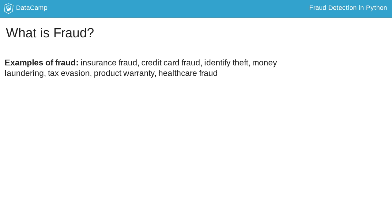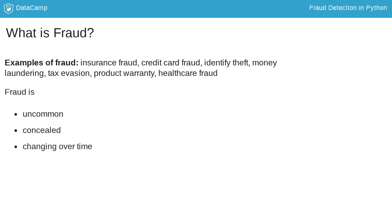Detecting fraud is typically challenging because of these four characteristics of fraud. First of all, fraud cases are in a minority — sometimes only one-hundredth percent of a company's transactions are fraudulent. Fraudsters will also try their best to blend in and conceal their activities. Moreover, fraudsters will find new methods to avoid getting caught and change their behavior over time. Lastly, fraudsters oftentimes work together and organize their activities in a network, making it harder to detect, and multiple client accounts may be involved in one fraud case.